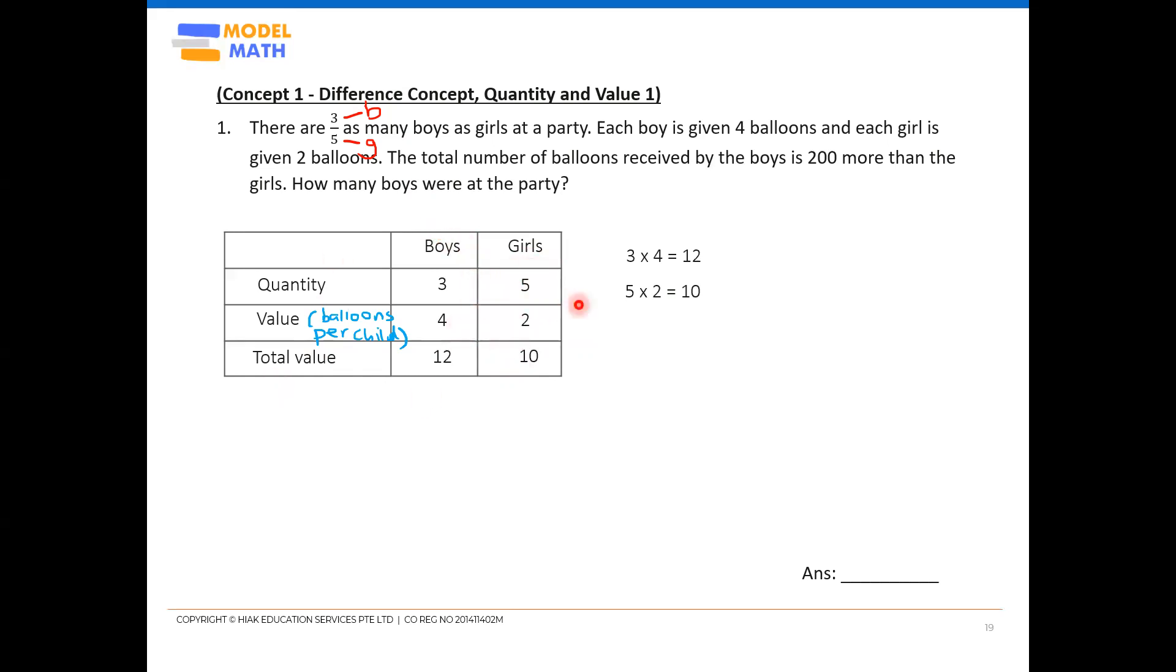Now, once this is done, one group settled already. We read on: total balloons received by the boys is 200 more than the girls. So when we see this 200 more, you must be able to identify that this is also known as your total difference. Why do we use the word total here? We could have just said difference. But why do we include the word total? Because there are many, many of these groups, and all these groups differences all contributes, adds up to 200.